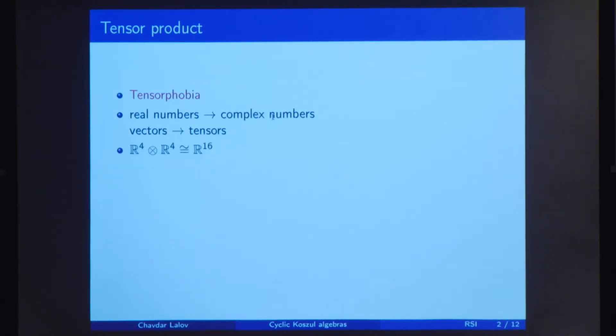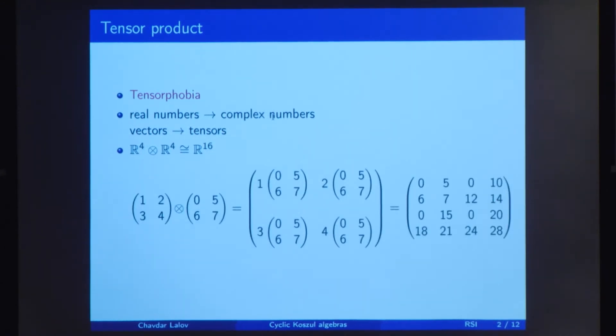We will introduce tensor product just by an example. If we have one four-dimensional space, R4, and we multiply it with another one, then we just get a 16-dimensional space, R16. We can demonstrate this with this example. We have two two-by-two matrices, and what happens after the tensor product is just a four-by-four matrix, which is obtained in a specific way.